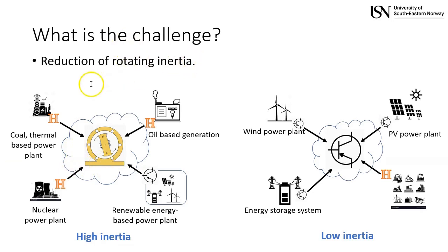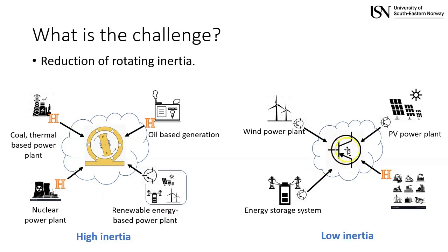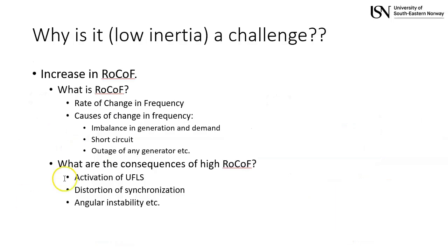The first question: what is the challenge? The challenge is the reduction of rotating inertia. We see how rotating inertia decreases over time. In a grid largely occupied by conventional generation, there is very high rotating inertia. On the other hand, a grid largely occupied by renewable energy sources has very low rotating inertia.